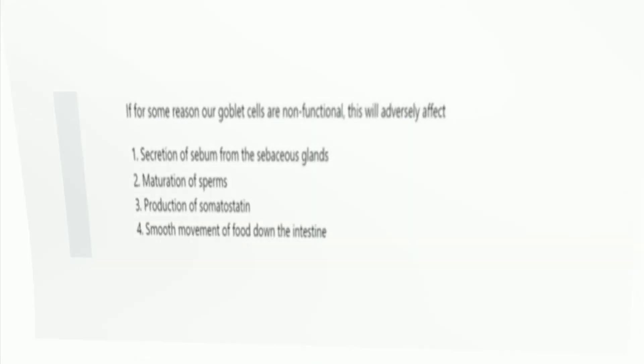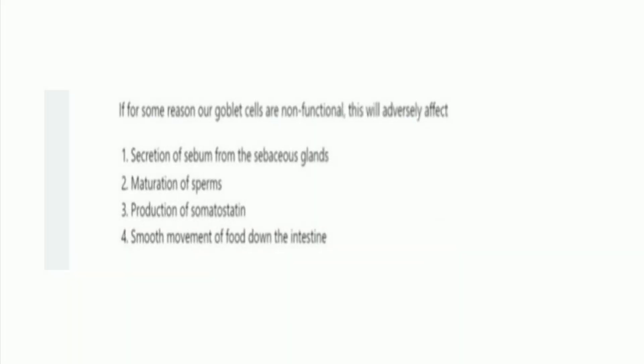Next question: if for some reason our goblet cells are not functional, this will adversely affect? The options are secretion of sebum from the sebaceous gland, maturation of sperm, production of somatostatin, and smooth movement of food down the intestine. The right answer is option 4, smooth movement of food down the intestine.